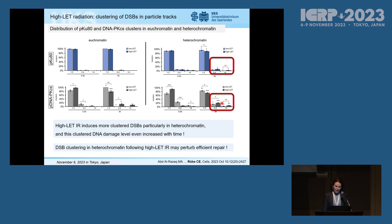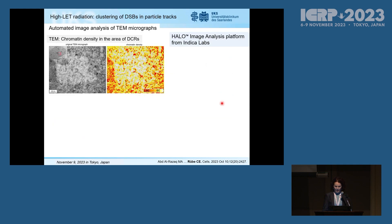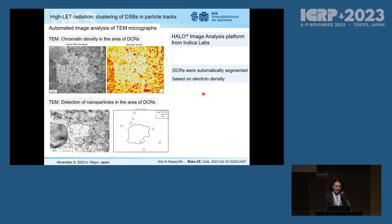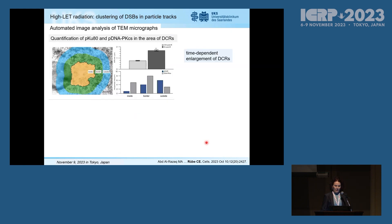We also analyzed the clustering of double-strand breaks within particle tracks, divided into size categories of one to two, three to four, and more than four nanoparticles. Everything more than two nanoparticles for phosphorylated Ku70, Ku80, or DNA-PKcs arranged in short distance is a cluster of more than two double-strand breaks. We can show that high LET induces more clustered double-strand breaks, particularly in heterochromatic regions, and these clustered DNA damage lesions even increased with time from half an hour to five hours. We presume that DSB clustering in heterochromatin following high-LET radiation may perturb efficient DNA repair.